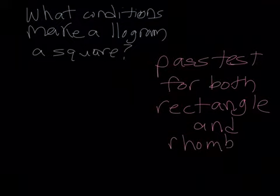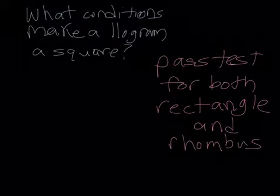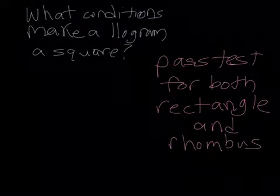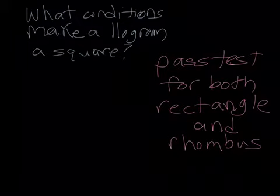So square is a special kind of rectangle and a special kind of rhombus. So if you have a rhombus that's also a rectangle, it must be a square.